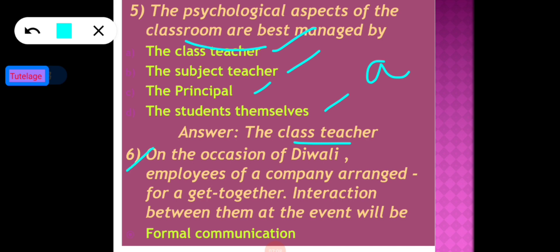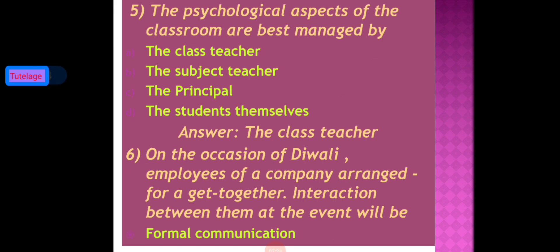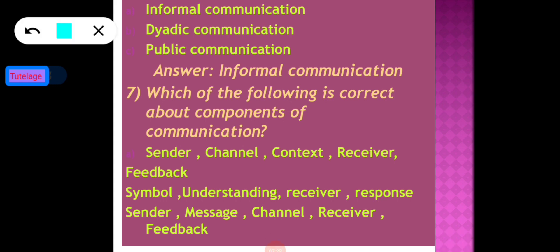The sixth question: on the occasion of Diwali, employees of a company arranged a get-together. The interaction between them at the event will be — formal communication, informal communication, dyadic communication, or public communication. During a Diwali get-together, the communication is informal. So the correct answer is informal communication. If you missed the previous session on types of communication, please check my description box.